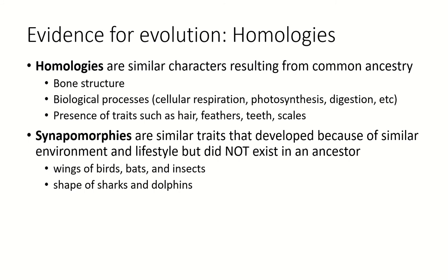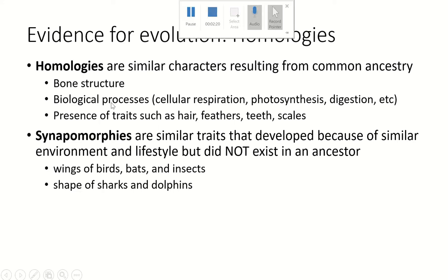Dolphins evolved from a land vertebrate — a land mammal that had four legs. Sharks are part of a very ancient lineage of fish that have never had legs. So the reason they have the same shape is because they live similar lifestyles, not because they developed from a common ancestor with that shape. To summarize: homologies indicate common ancestry; analogies indicate different ancestry.